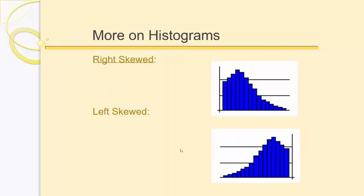Two other types of distributions are called skewed distributions. This one looks like a normal curve and then has a tail that shoots off to the right — this is called a right skewed distribution. And this one looks like a normal curve but has a tail off to the left — this is called left skewed.